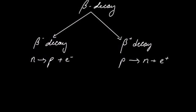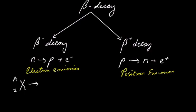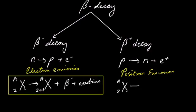And in a beta-plus decay, a proton turns into a neutron and a positron, hence called a positron emission. Beta-minus decay is called an electron emission. The general equation for the beta-minus decay is shown as well as that of the beta-plus decay.